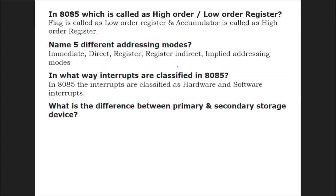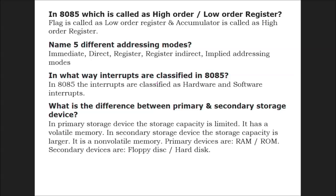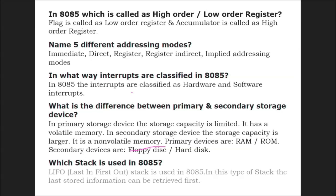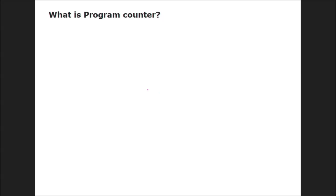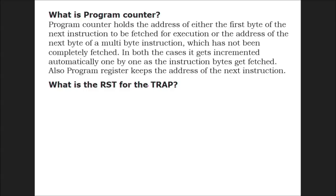What is the difference between primary and secondary storage device? In primary storage device, the storage capacity is limited and it has volatile memory. In secondary storage device, the storage capacity is larger and it is non-volatile memory. Primary devices are RAM, ROM; secondary are floppy disks, hard disks (we don't have floppy disks now). Which stack is used in 8085? LIFO. What is the RST for the TRAP? RST 4.5 is called TRAP.